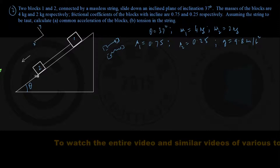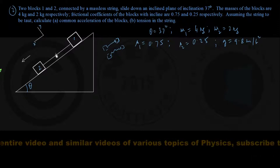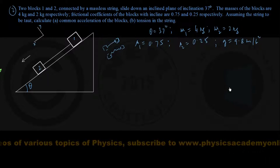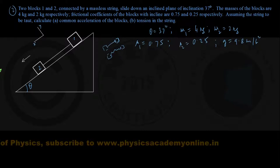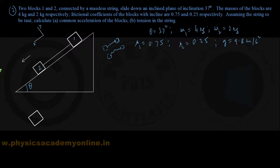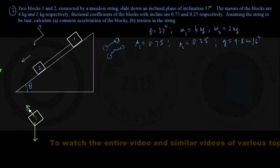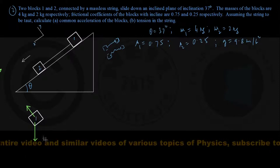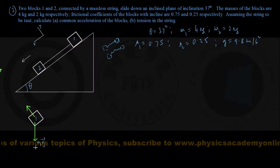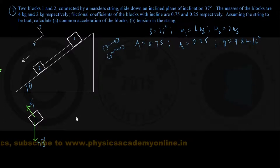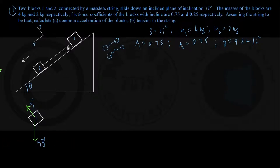Since the string is taut, the acceleration of both blocks must be the same. Here is the free body diagram of block 1, the upper block. The force of gravity M1g acts vertically downwards. The normal force N1 acts perpendicular to the incline, applied by the incline. The string applies tension force T down the incline on block 1.